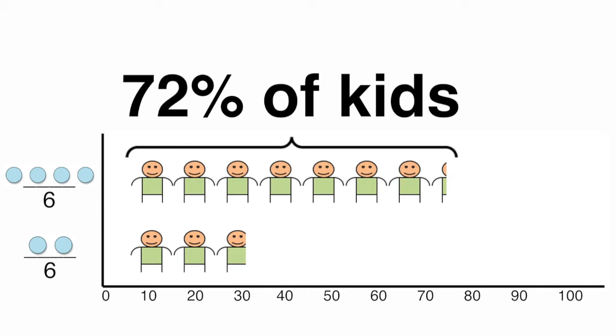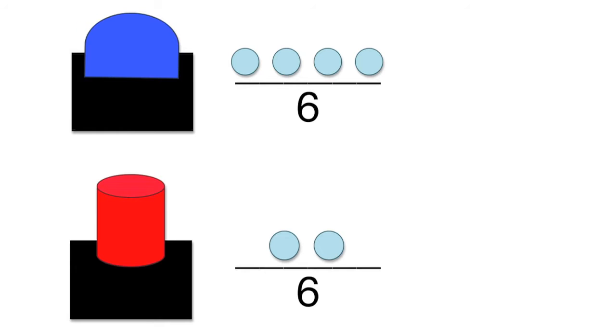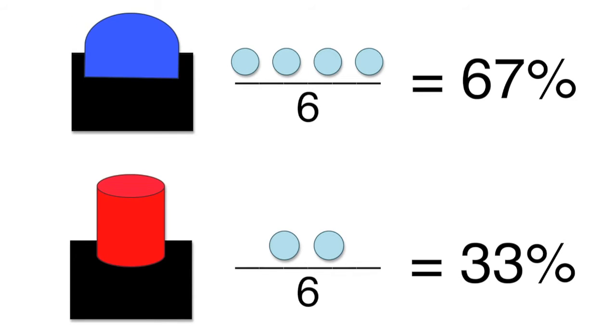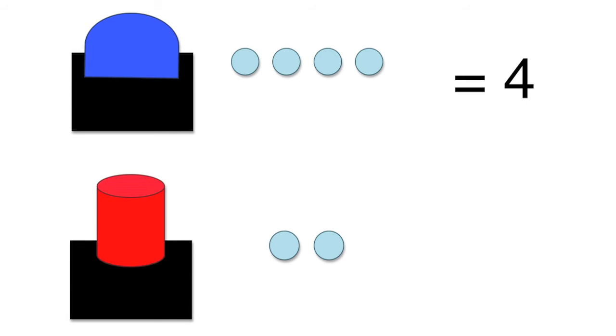It wasn't clear though whether the children are making their choices based on probability, the better 67% effective block compared to the 33% effective one, or frequency, the better four marble option compared to the two marble option.